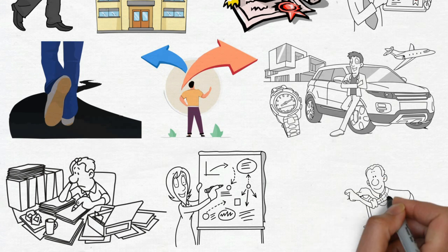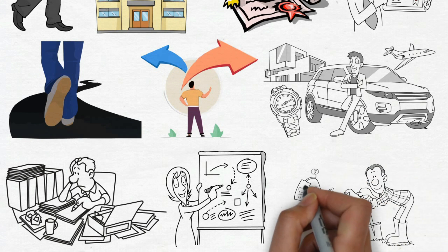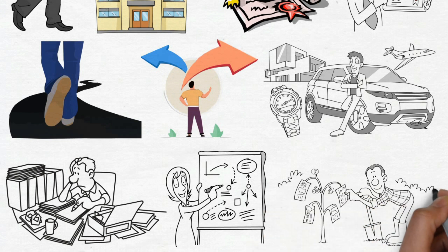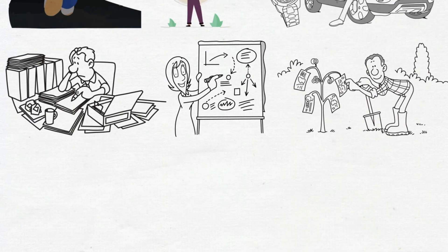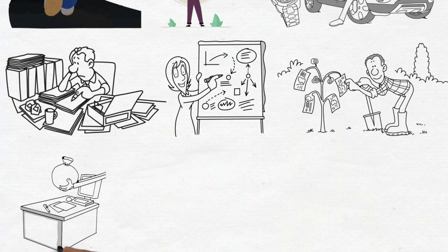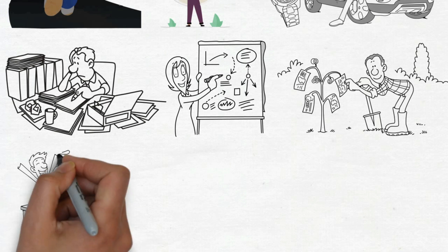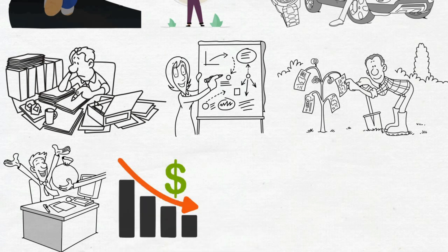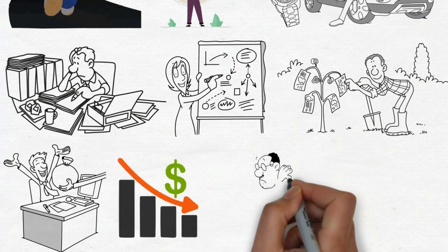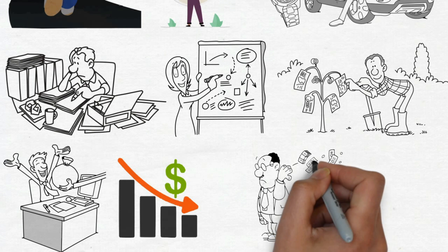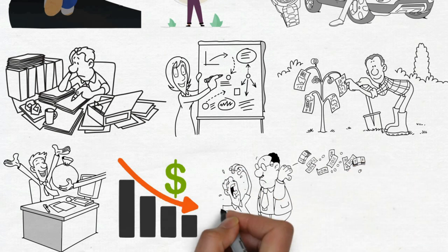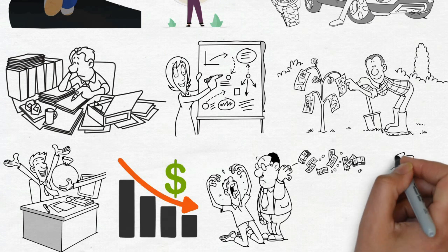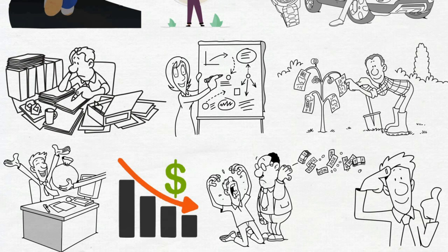Individuals of substantial wealth recognize a fundamental truth: relying solely on a salary will never lead to attaining wealth. This is due to the inherent conflict of interest. When your employer increases your compensation, it translates to diminished profits for the business owners. As human nature inclines towards self-interest, employers naturally seek to compensate their employees minimally. So, if you want to become wealthy, it's really important to move away from the usual way of relying on a salary.